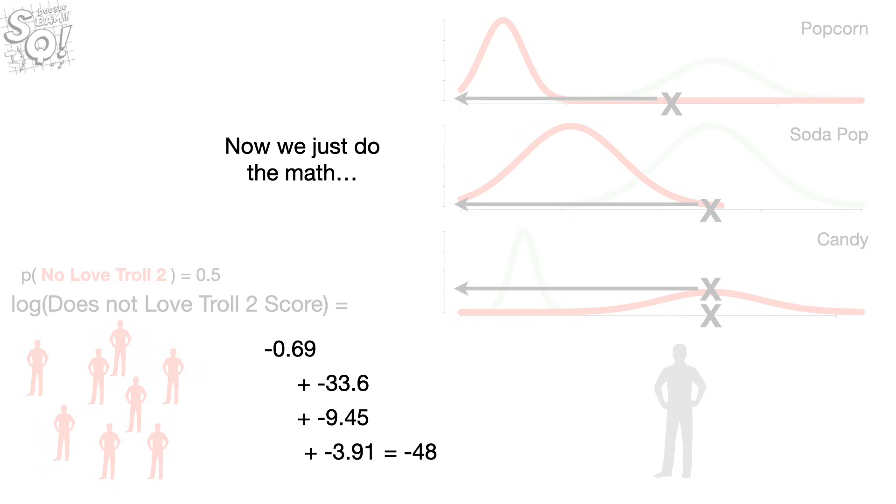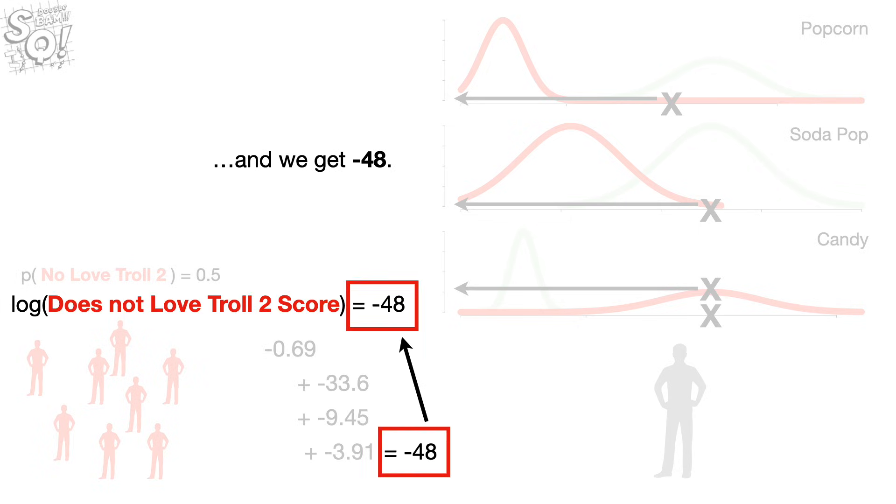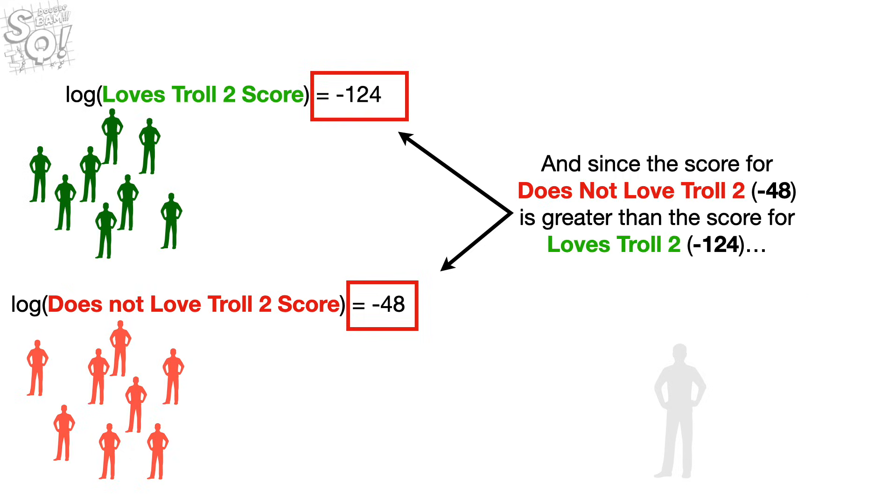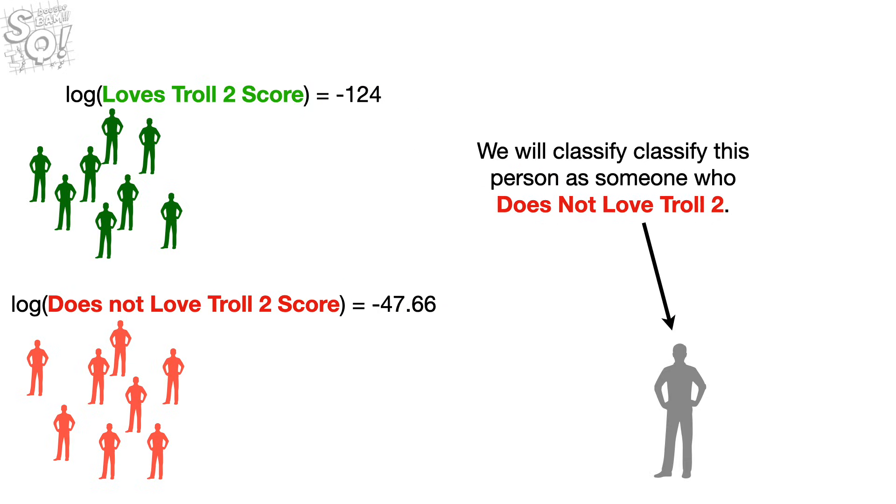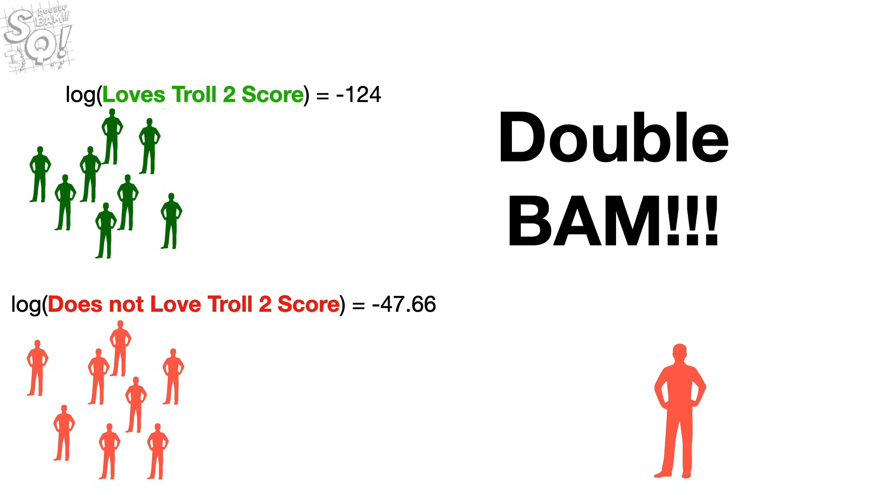And we get negative 48. And since the score for does not love Troll 2 is greater than the score for loves Troll 2, we will classify this person as someone who does not love Troll 2. Double bam!